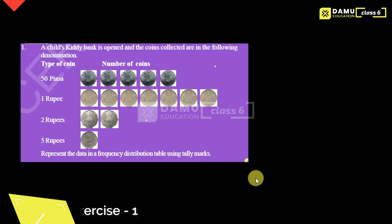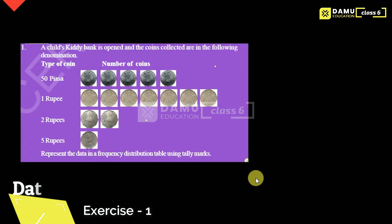In this module we have to discuss a problem where a child's kitty bank is opened and coins collected around the following denominations. The type of coin and number of coins are given. We need to represent the data in a frequency distribution table using tally marks.